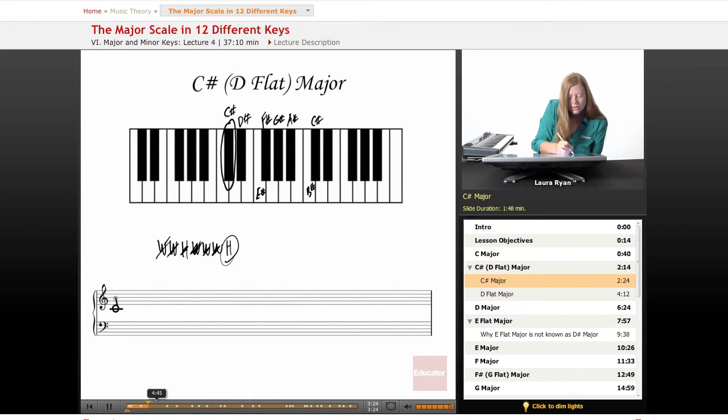Let's write it out starting with our C sharp. C sharp to D sharp, we'll draw a sharp next to the D sharp. We're not going to do any key signatures for this lesson, we'll just write an accidental, either a sharp or a flat, next to the note. C sharp, D sharp, E sharp is actually a white key also known as F natural, G sharp, A sharp, B sharp, C sharp. Every note is sharped.